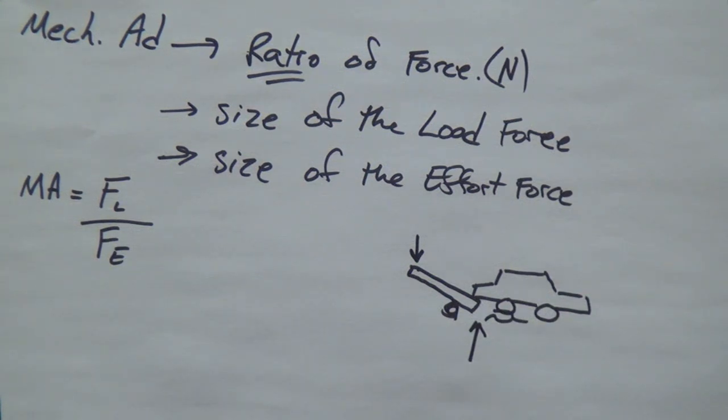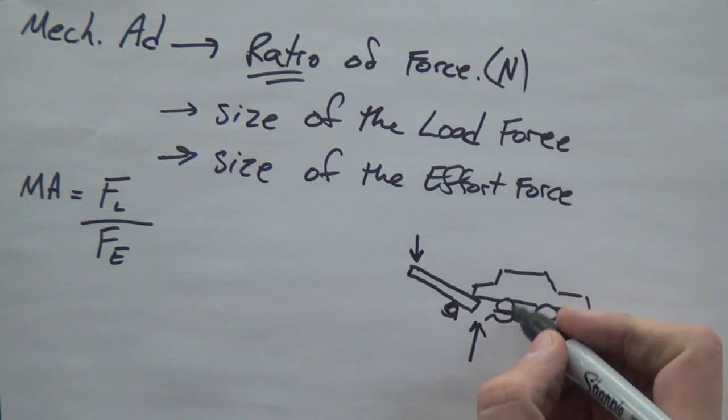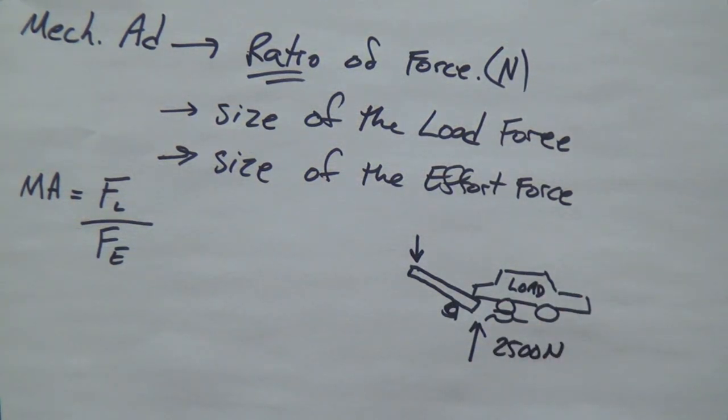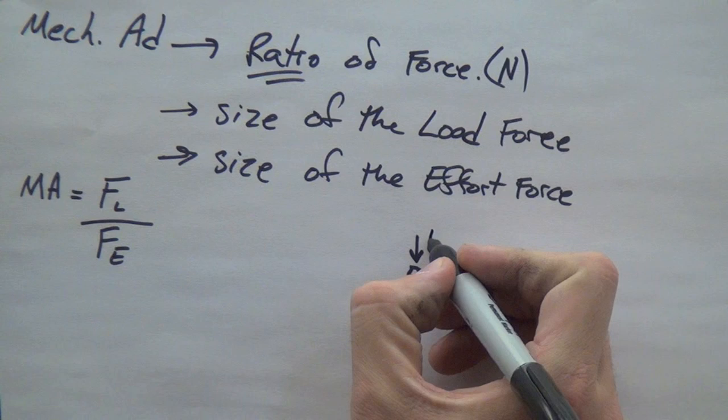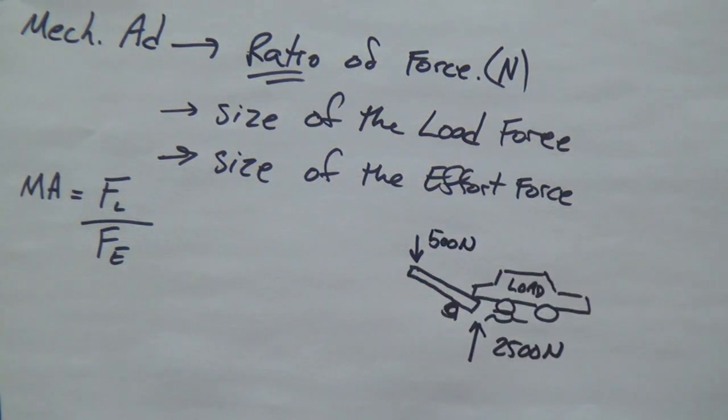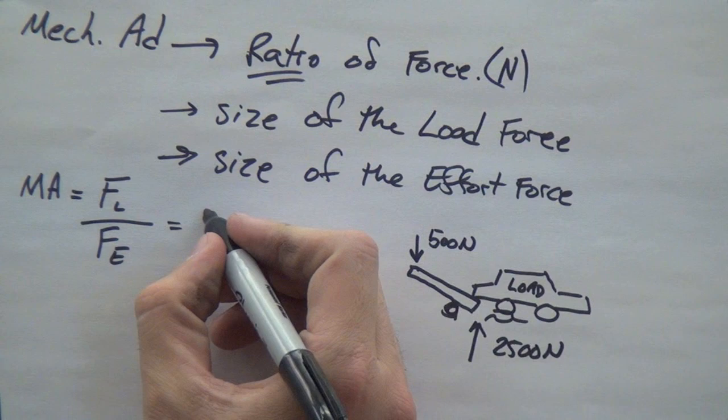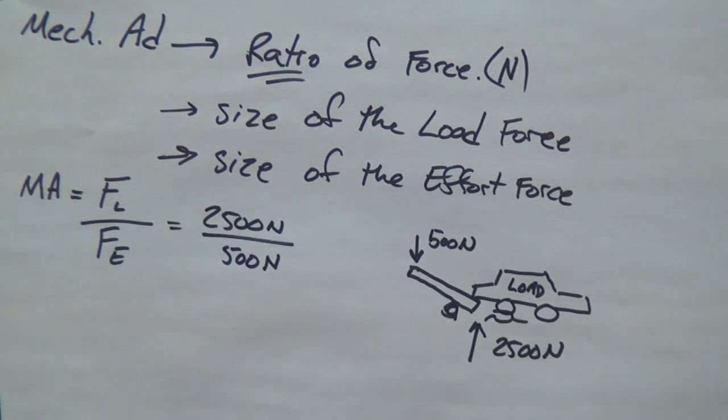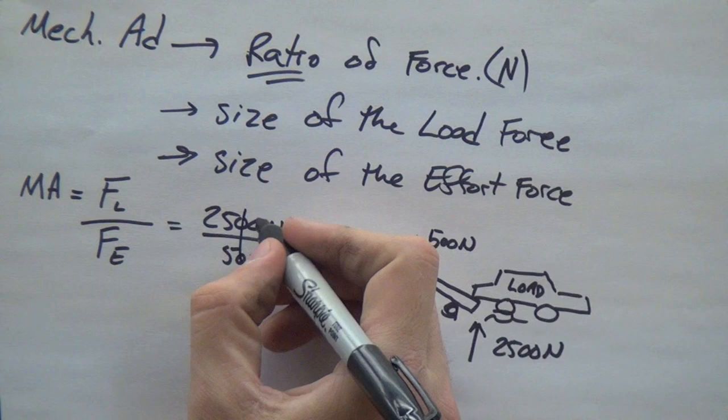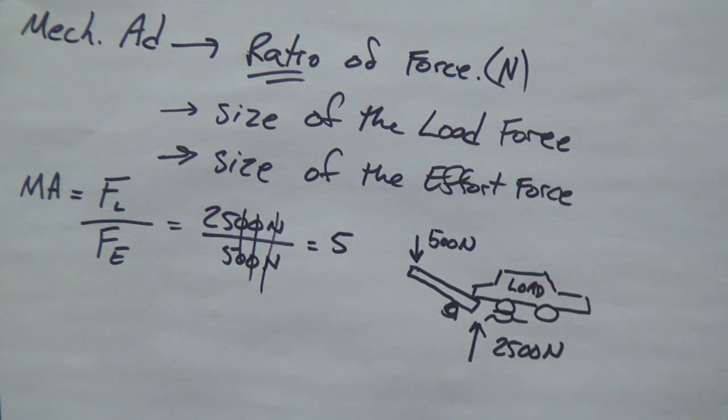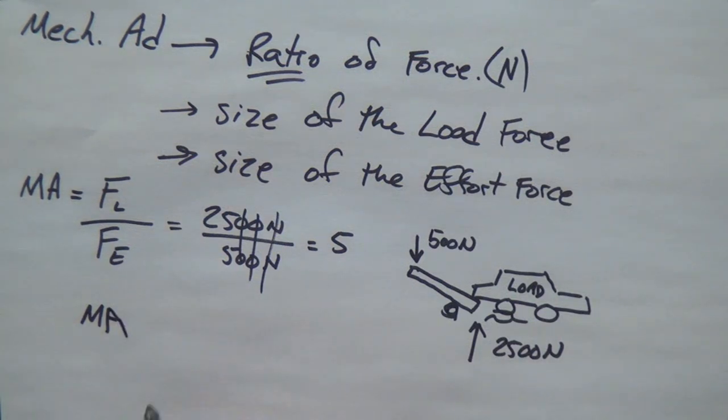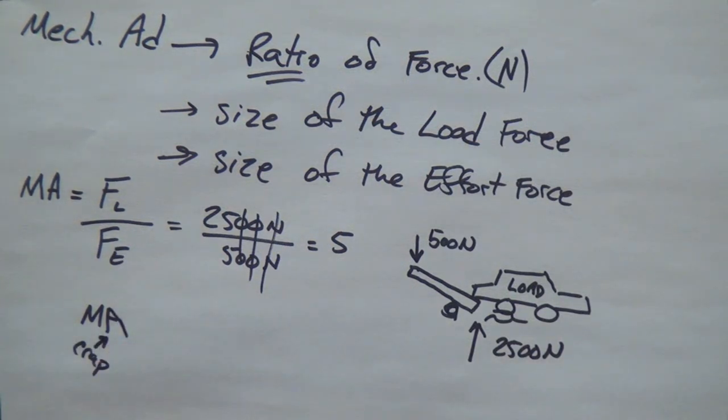Now, the force of the load and the force of the effort are two different things. Let's just say that this load, this Aries K car, 2,500 newtons of weight. And this machine only requires 500 newtons of effort. So, let's put it into our formula. Force of the load, 2,500 newtons. Force of the effort, 500 newtons. When we divide this up, we will have this ratio of force. So, you'll notice that there is no units. That's what a ratio is.